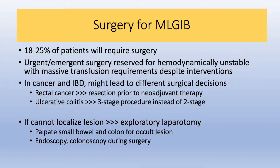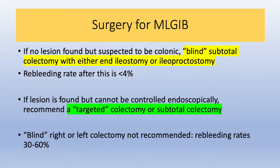If the bleeding cannot be located and surgery is required, an exploratory laparotomy should be performed where the small bowel and colon are investigated, with endoscopy and colonoscopy performed during the procedure. If no lesion is found but suspected to be colonic, a blind subtotal colectomy with either an end ileostomy or ileoproctostomy is recommended — re-bleeding after this resection is typically less than 4%. A blind right or left colectomy is not recommended as re-bleeding rates can be as high as 60%.